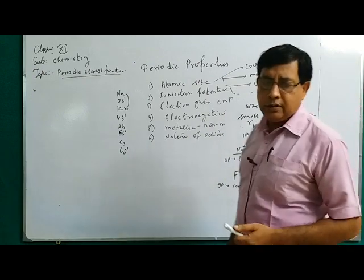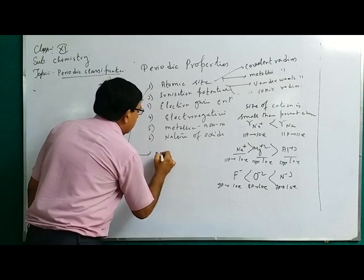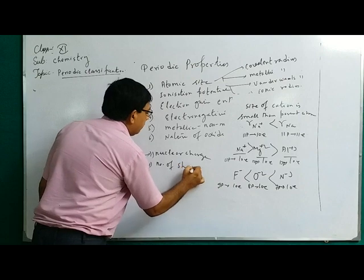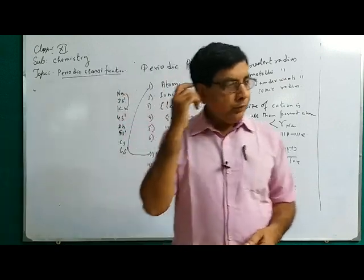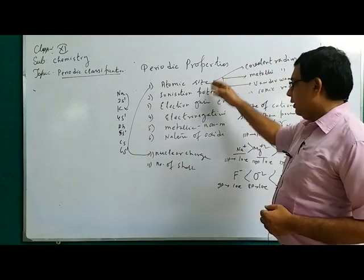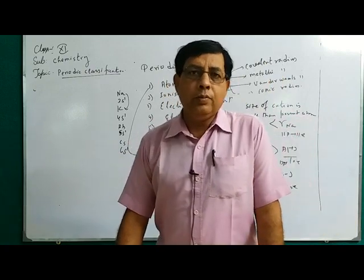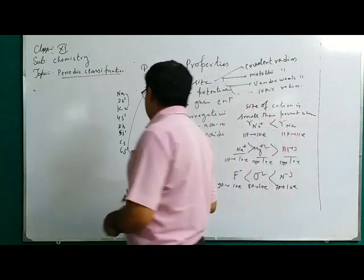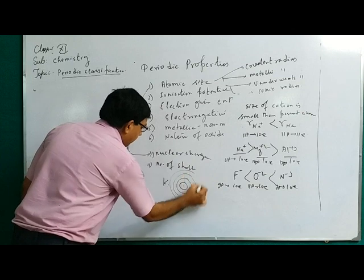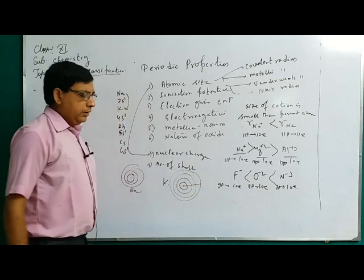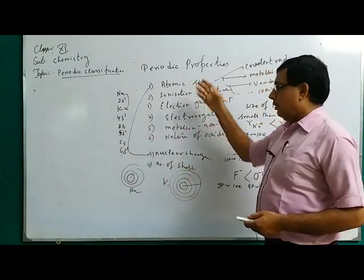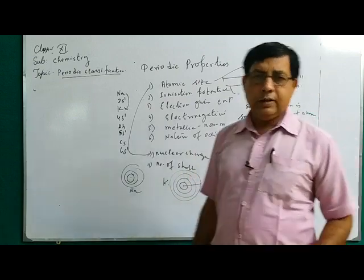Atomic size depends on two factors: number one, nuclear charge; and number two, number of shells. If nuclear charge increases, the attractive force on the electron cloud increases, so the electron cloud comes closer and size decreases — atomic size is inversely proportional to nuclear charge. Atomic size is directly proportional to the number of shells. If the number of shells increases, the distance from nucleus to the outermost shell increases, so atomic size increases. If number of shells decreases, atomic size decreases.